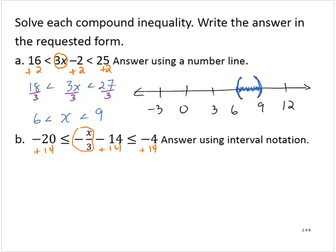Yielding negative 6 is less than or equal to negative x over 3 is less than or equal to 10. Now, I can isolate the variable by multiplying by negative 3. I must multiply all three parts by negative 3.